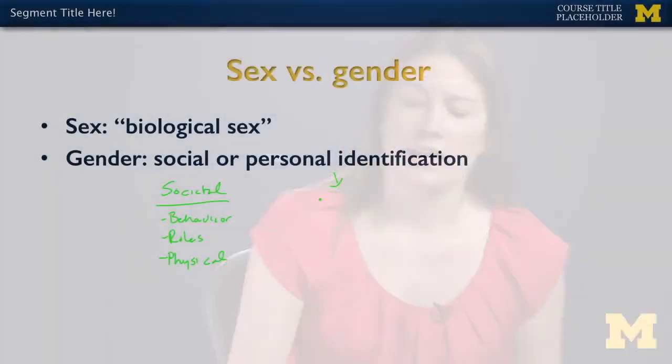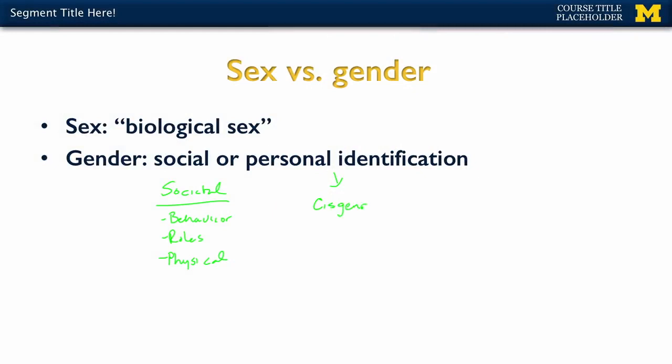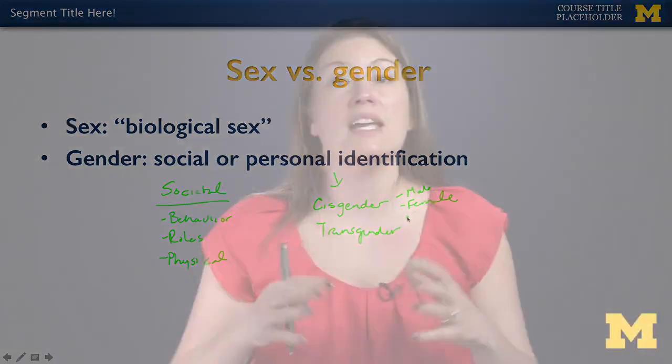Another type of gender identification is what an individual identifies as — this is the personal identification. Often times they can identify themselves as cisgender, so male or female, or transgender. This is what the individual personally identifies as, and in terms of whether that matches up with the societal identification or the biological sex, there is a lot of variation there.